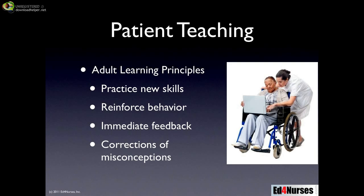Adult learners also want immediate feedback. We want to tell them right away whether or not they're on track, and give them a lot of reassurance along the way. The best way to do that is if we're in the room doing one-on-one teaching with that patient and showing them as they go along. Corrections of misconceptions are also important with adult learners. You've probably already experienced this on many occasions when your patient or the patient's family has misconceptions about a disease process, and we have to correct those as we go through our teaching.